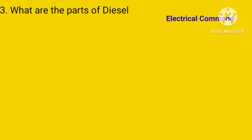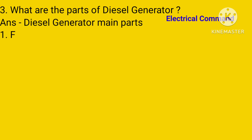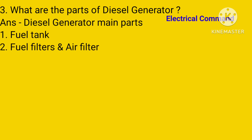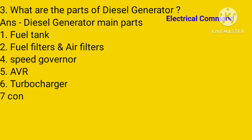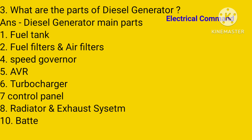What are the main parts of a diesel generator? The main parts of a diesel generator are: fuel tank, fuel filter, air filter, AVR, speed governor, turbocharger, controller, radiator, exhaust system, battery, alternator, and diesel engine.